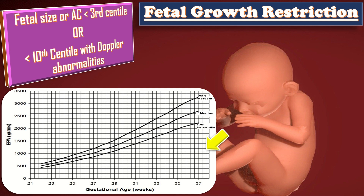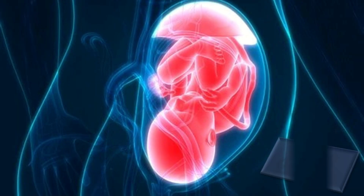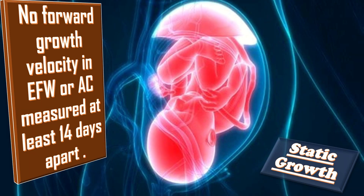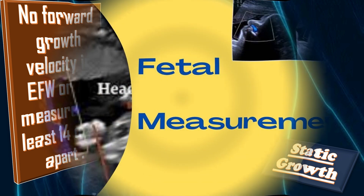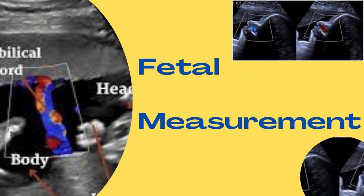Fetal growth restriction can be described as early when detected before 31 plus 6 weeks, or late from 32 weeks onward. Static growth is defined as no forward growth velocity in estimated fetal weight or abdominal circumference measured at least 14 days apart.